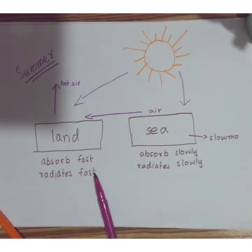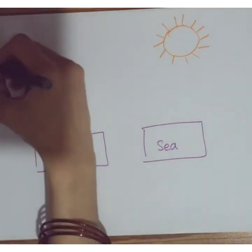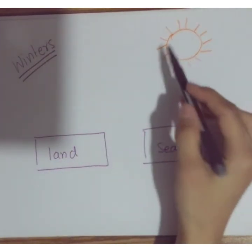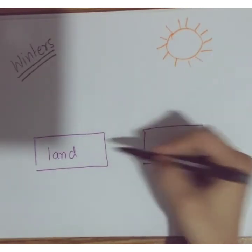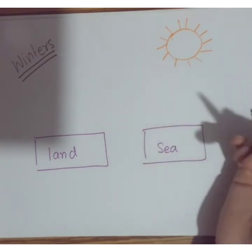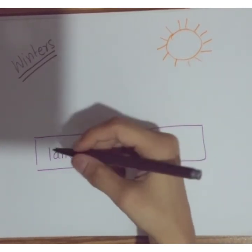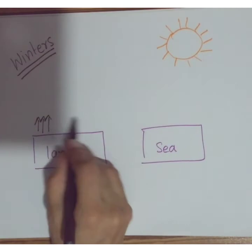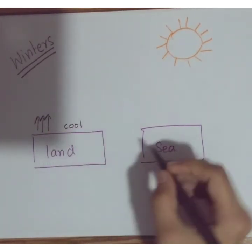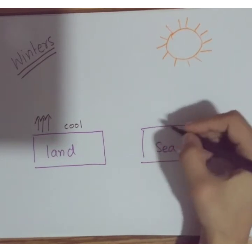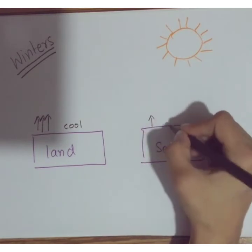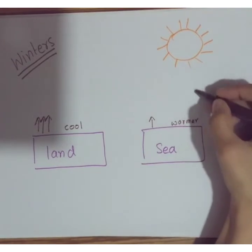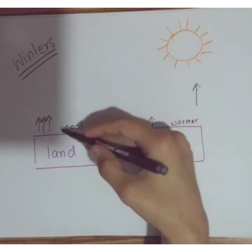Now let's talk about what happens during the winter season. The Sun is not as powerful, and now the land and sea are radiating off the heat they had absorbed. The land radiates heat very fast, so the air above the land becomes cool. The sea radiates heat at a slower rate, so the air over the sea is still warmer — being warmer, it is less dense and moves upwards.